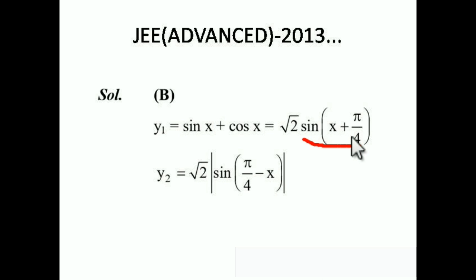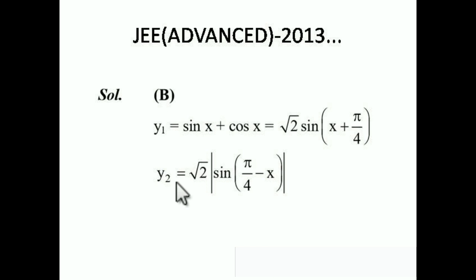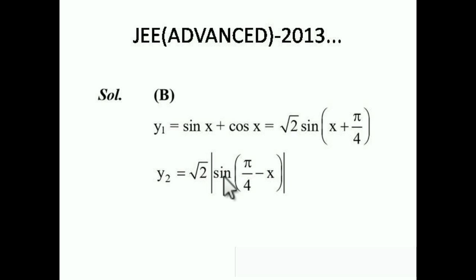Similarly for the second curve: y₂ = |cos x − sin x|. Multiplying and dividing by √2, we get √2 · |sin(π/4) · cos x − cos(π/4) · sin x|, which becomes √2 · |sin(π/4 − x)|.